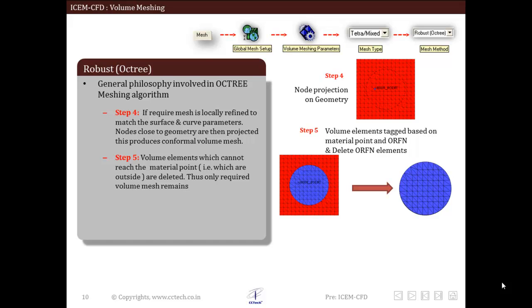Now in the next step, volume elements which are outside the domain will be deleted. Material point plays vital role in deciding which element to keep and which to delete. Elements which cannot reach the material point must lie outside the volume domain and will be deleted. Thus other elements which remain constitute the required volume mesh.